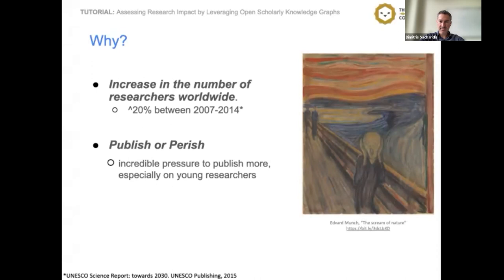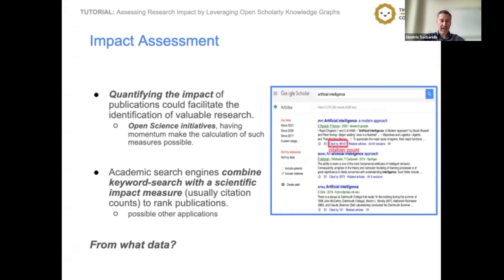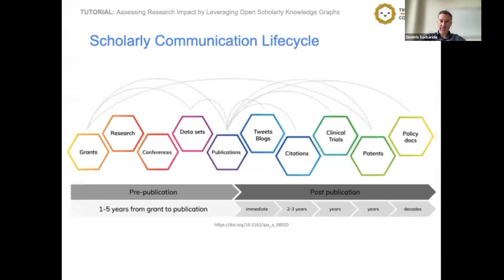The increasing number of scientific outputs creates the need for methods that assess the impact of publications. The predominant indication of impact is the citation count of a paper. Academic search engines combine keyword-based search with scientific impact measures such as citation counts to rank publications. To assess research impact, we need to capture the entire life cycle of scholarly communications. Beyond publications, there is additional information such as grants, publication venues, datasets, citations, and patents.